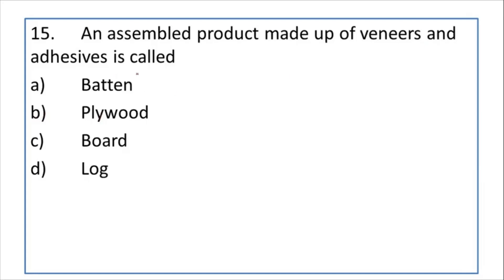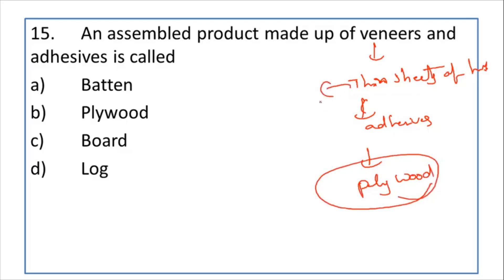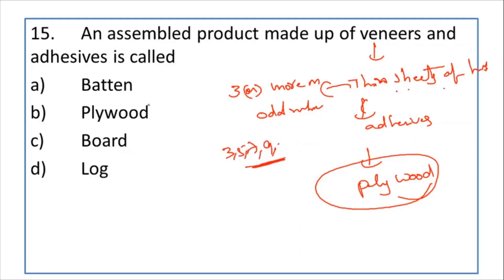An assembled product made up of veneers and adhesives is called plywood. Veneers are thin sheets of timber. If you stick these thin sheets using adhesives, the product is called plywood. To make plywood, a minimum of three sheets are needed, and they must be in odd numbers — three, five, seven, nine, etc. You should never use an even number of thin sheets to make plywood.